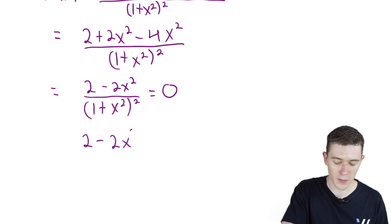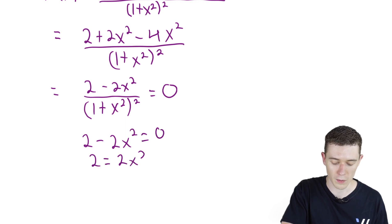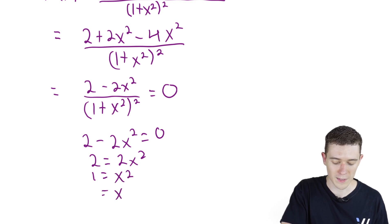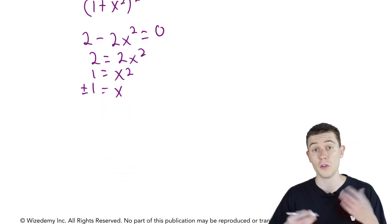Our only solutions will come from the numerator: 2 minus 2x squared equals 0, so 2 equals 2x squared, then 1 equals x squared, giving us x equals plus or minus 1.